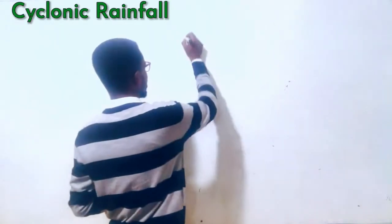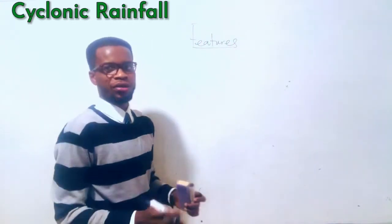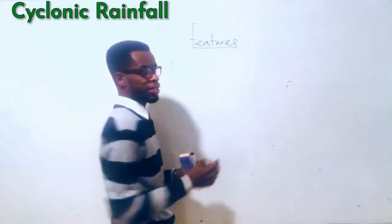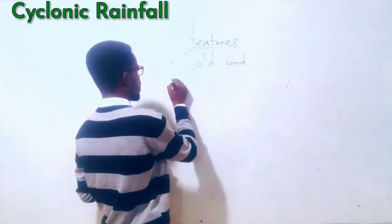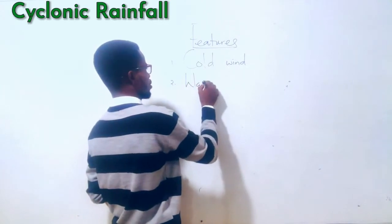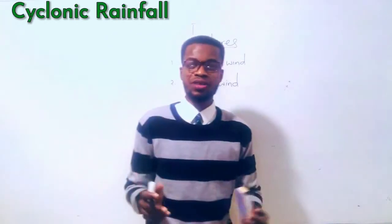Now let's look at the features. The features are important — when you are able to jot them down, you can tell how to put them together to form a very nice description before you support it with a diagram. So what are the features? If we're looking at cyclonic rainfall, as already mentioned, there is cold wind and there is warm wind.